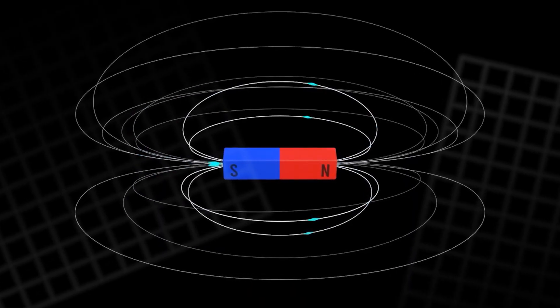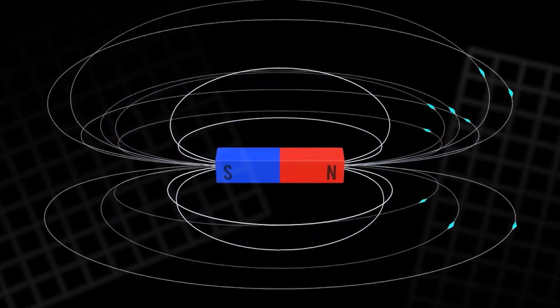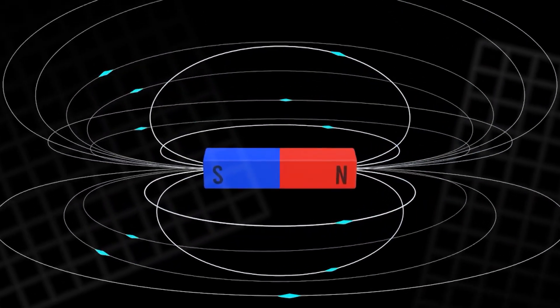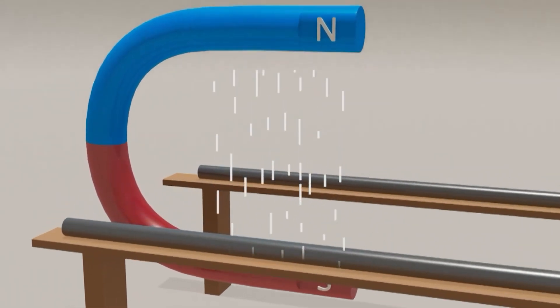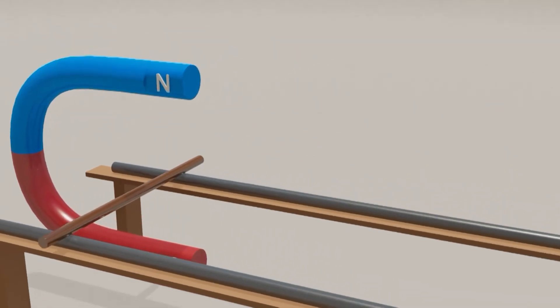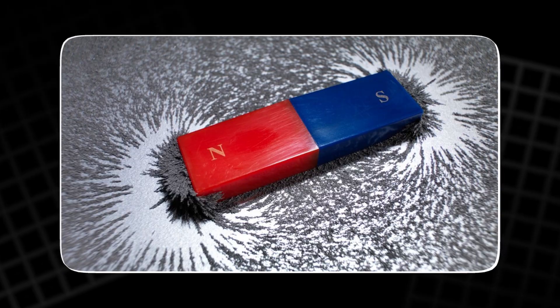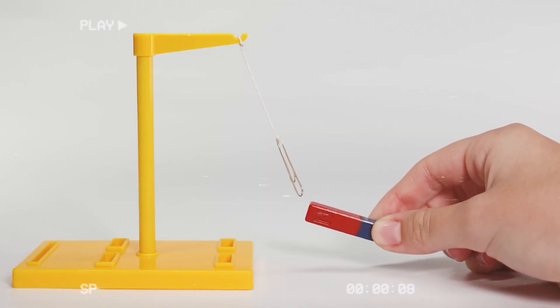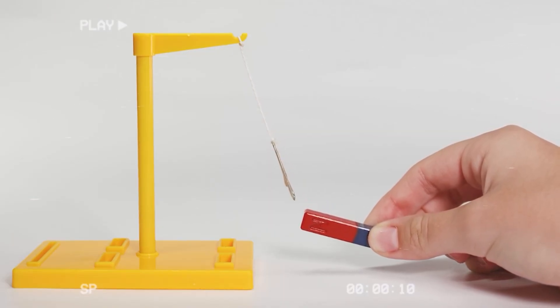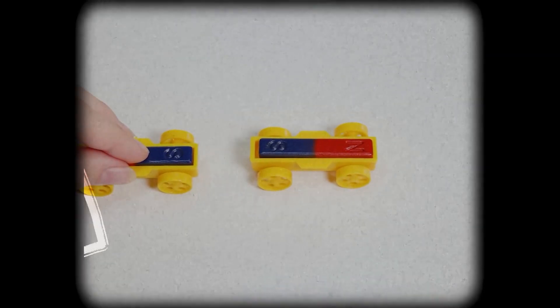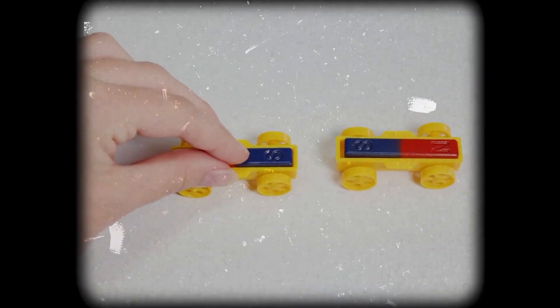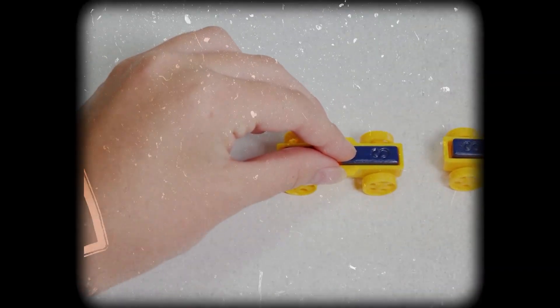Now the focus shifts to magnets. Magnets possess two poles, north and south. These poles never exist alone, always bound in pairs. Opposite poles attract each other while like poles repel. Place a paperclip near a magnet and it leaps forward, held firmly. Bring a second magnet close, and attraction or repulsion reveals itself depending on the alignment.